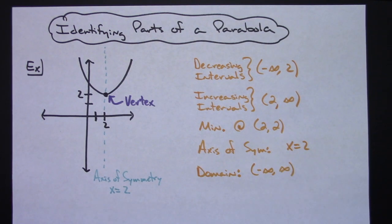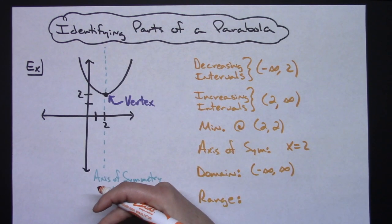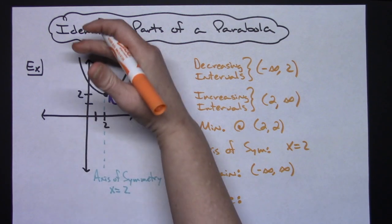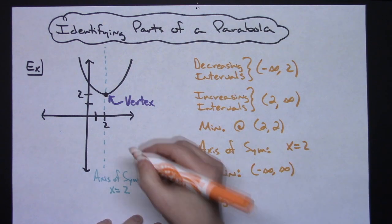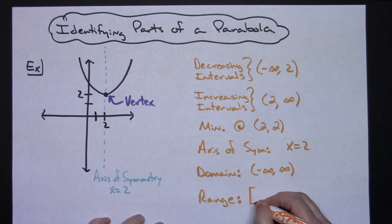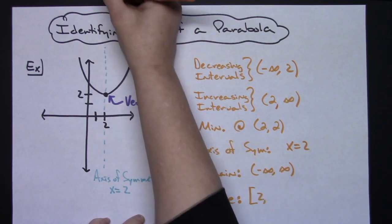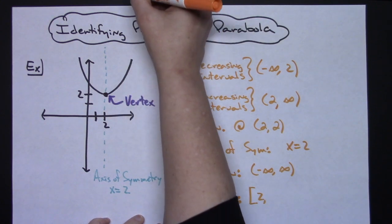And then we can also take a look at the range. Range is what y values does this parabola cover. The lowest y value is 2 and it is included in our function, and then how high up does the parabola go? Well, it goes up forever and ever, so all the way up to positive infinity.